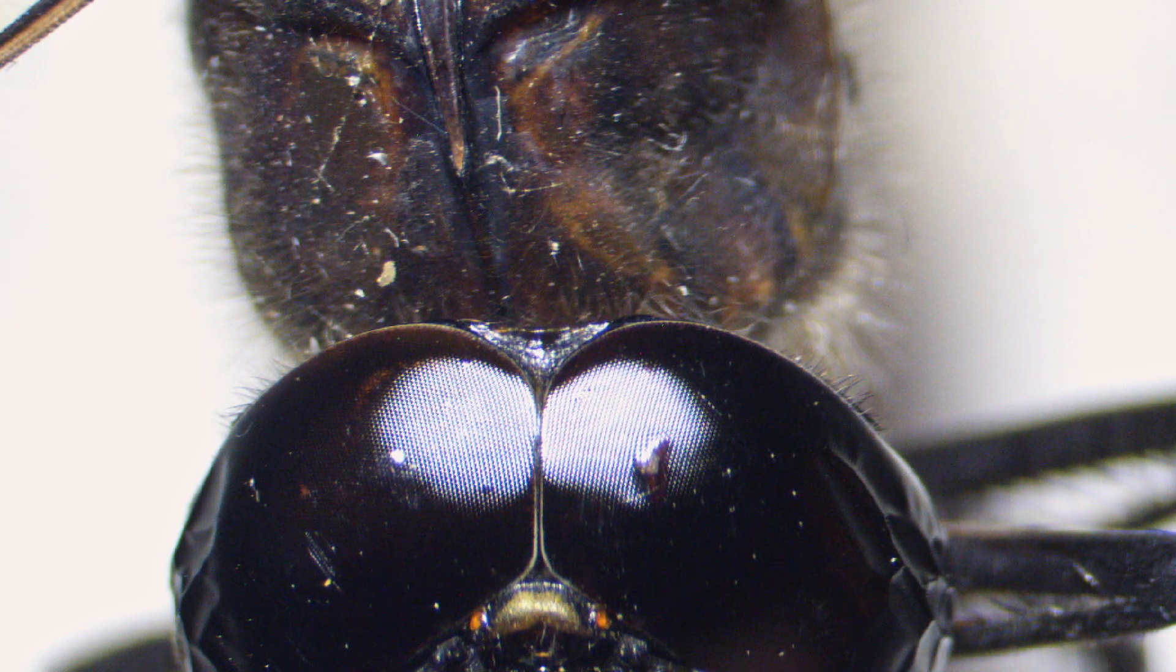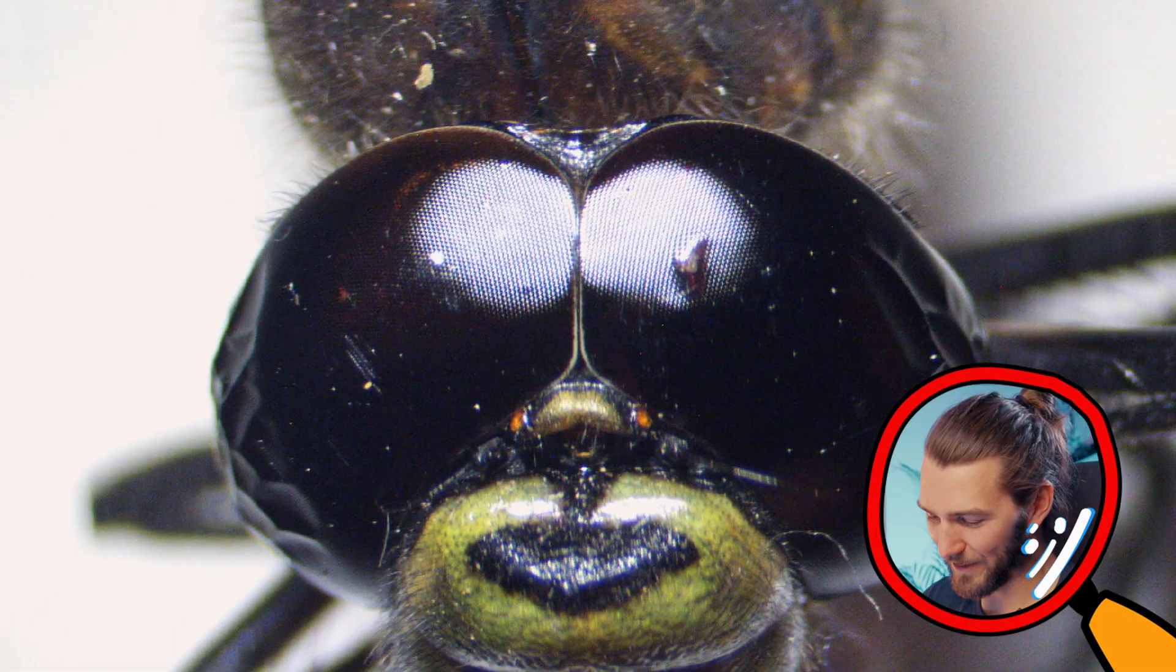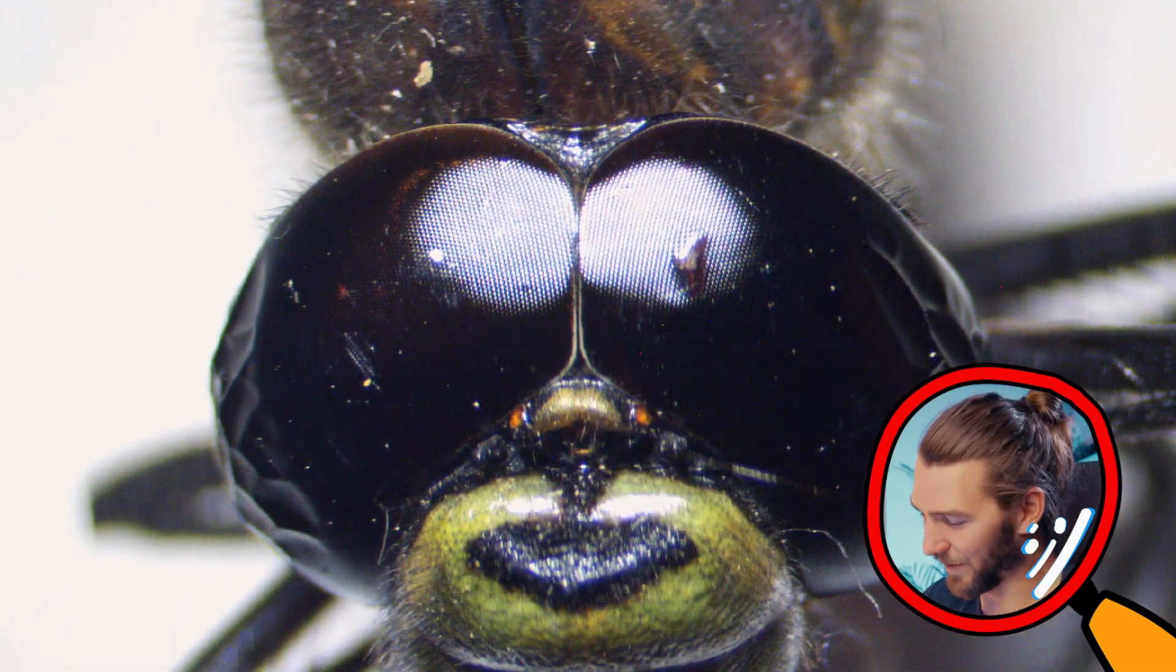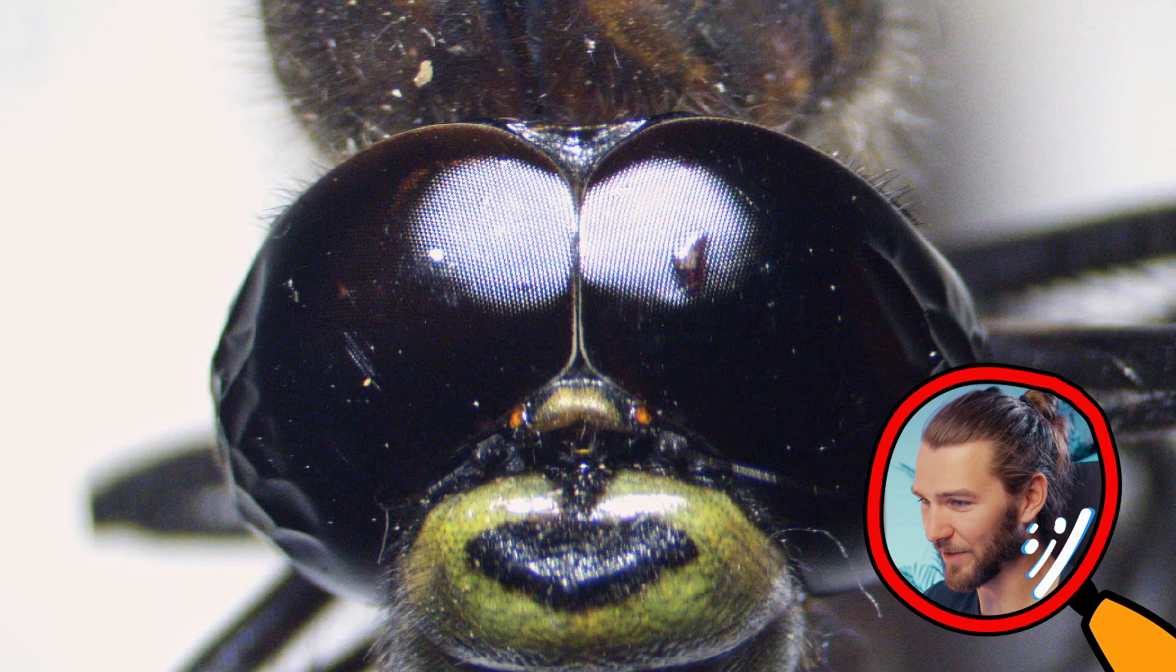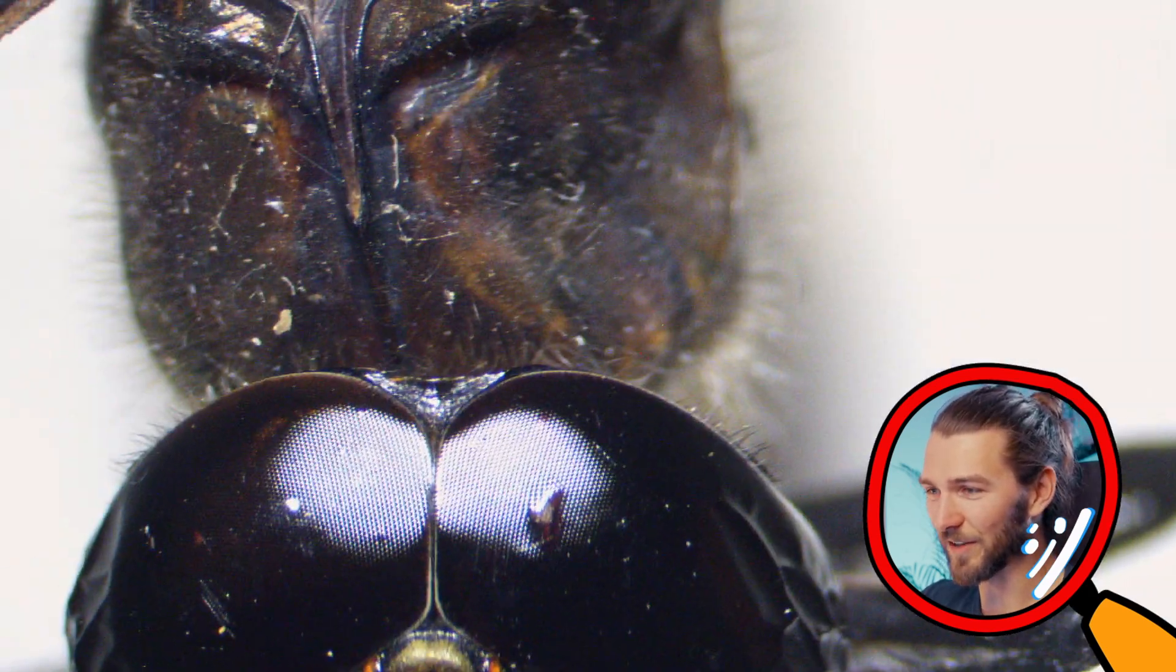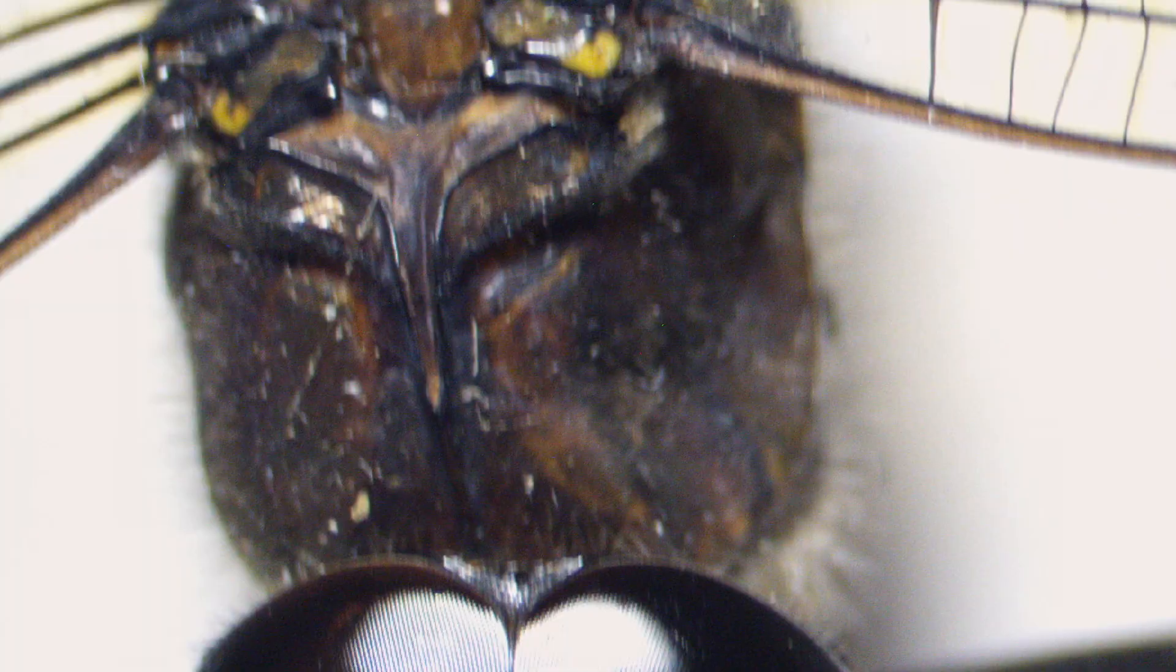Okay, so the back part is his abdomen. The middle part is his thorax and his face. Here in the front, the green part, his two eyes are attached here to his thorax. It's crazy.